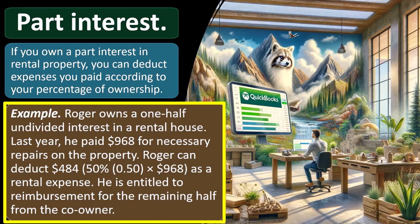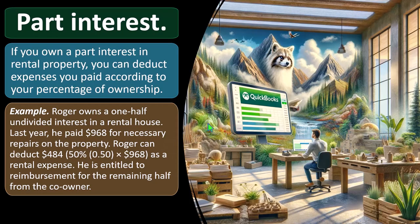Example: Roger owns a one-half undivided interest in a rental house. Last year he paid $968 for necessary repairs. Roger can deduct $484.50 as a rental expense and is entitled to reimbursement for the remaining half from the co-owner. Even though he paid for it, in a co-ownership situation the expense should be divided between them. You can get into questions about whether to have two Schedule Es breaking out the allocation, or possibly a partnership with K-1 flow-through.